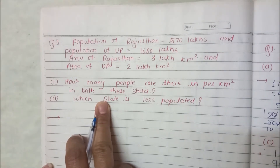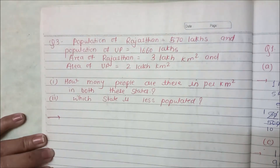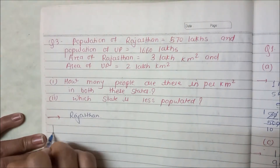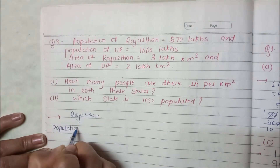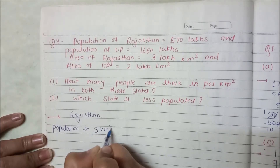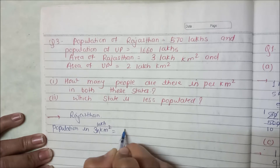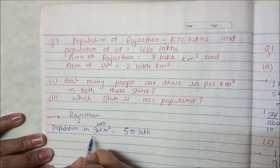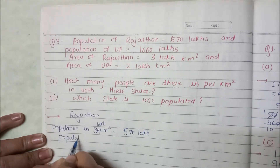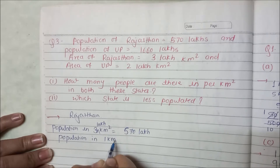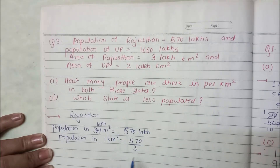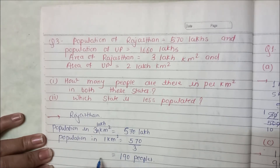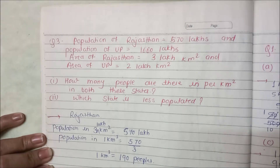For Rajasthan, population is 570 lakhs and area is 3 lakh km². So population in 1 km² area: 570 divided by 3 equals 190 people. So 190 people are living in 1 km² area in Rajasthan.